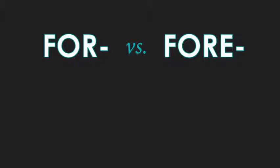Let's take a closer look at that prefix. You've got the prefix 'for-' in English that means 'away' — away from, separation — and then there's another one that sounds exactly the same, 'fore-,' spelled with an 'e,' and that one has to do with 'before.' You can even see it in the word 'before': b-e-f-o-r-e.